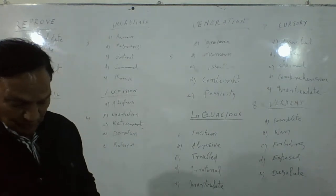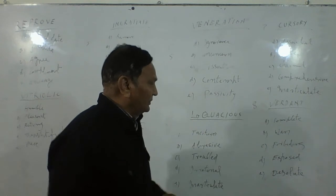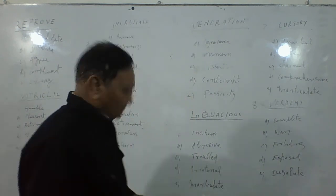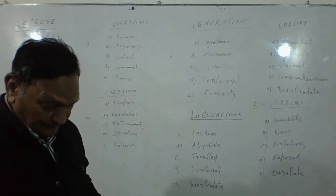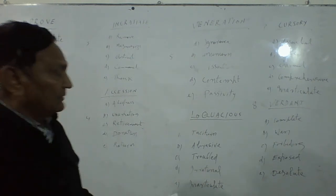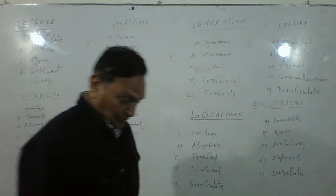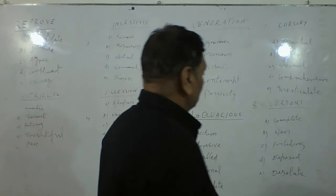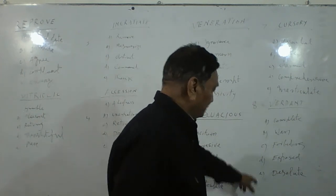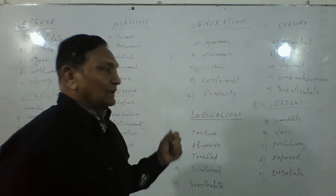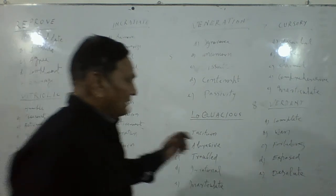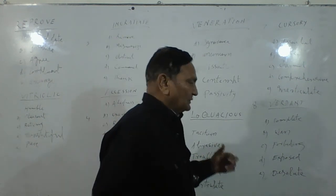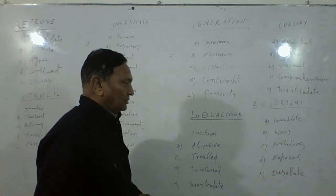So our answer is E: Desolate. Verdant means lush green — a place where life is comfortable — and desolate means a place where no one can exist or live, like a barren land. So verdant and desolate are complete opposites.